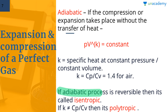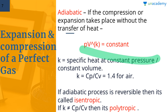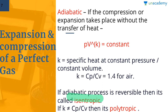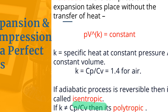If the adiabatic process is reversible in nature, meaning it can be brought back to its initial stage, then it is called an isentropic process. Also, if the value of K is not equal to Cp/Cv, then the process is called a polytropic process.